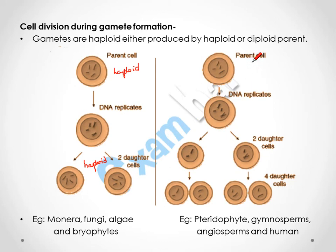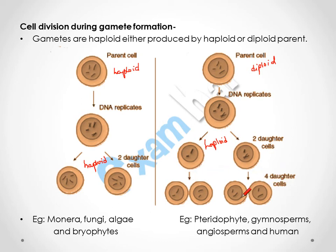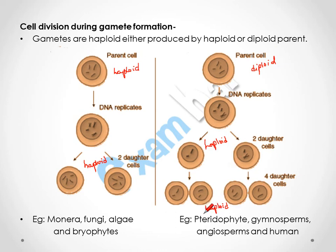If the parent cell is diploid, the DNA replicates and the two daughter cells each receive half the chromosome number — the haploid condition. These daughter cells then replicate their DNA again and produce two more daughter cells, giving four haploid cells in total. This is seen in Pteridophytes, Gymnosperms, Angiosperms, and humans, as demonstrated in spermatogenesis and oogenesis.